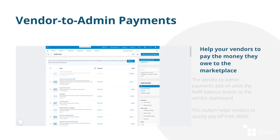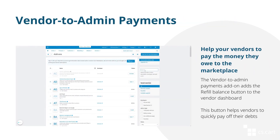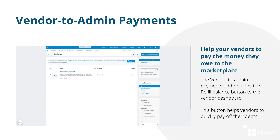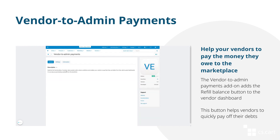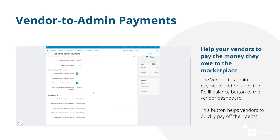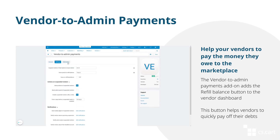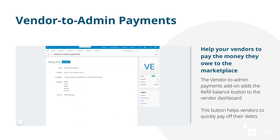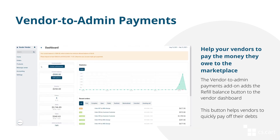Each vendor gets all their money, and the commission for the transaction becomes their debt to the marketplace. The vendor can pay off their debt using the vendor-to-admin payments add-on. All they have to do is go to the dashboard and click the refill balance button.